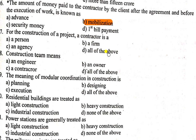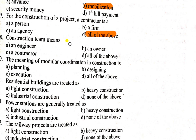Question number 27: For the construction of a project, a contractor is — a person, a firm, an organization, or an agency — all of the above. So the correct answer will be all of the above, because in construction it means an engineer, an owner, a contractor — all of them.